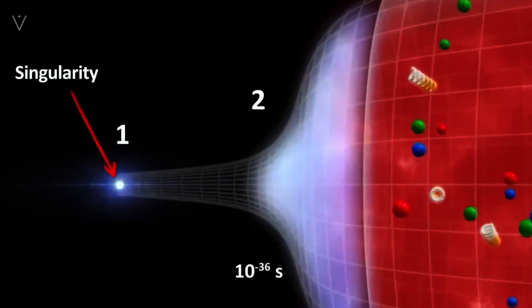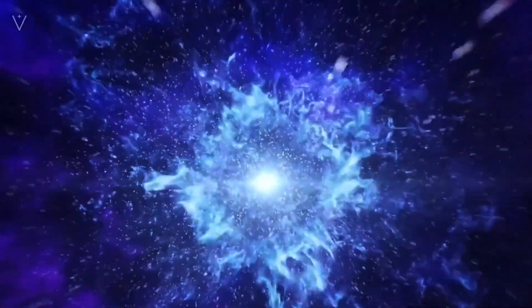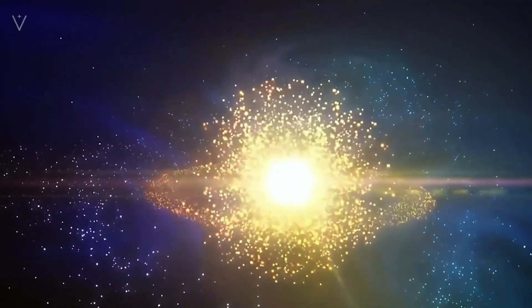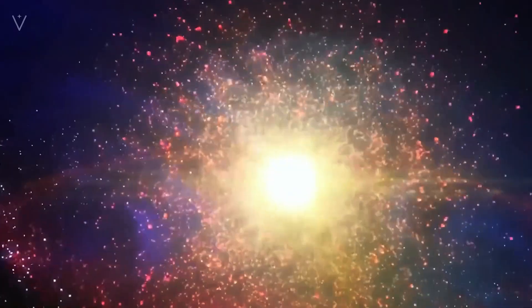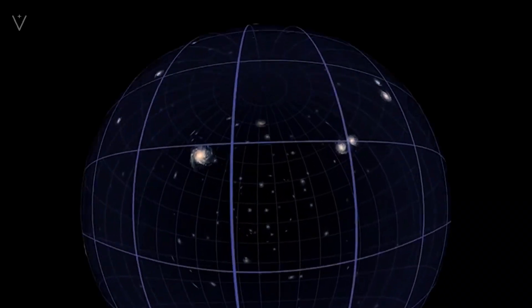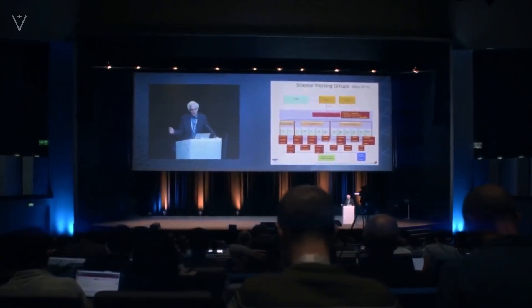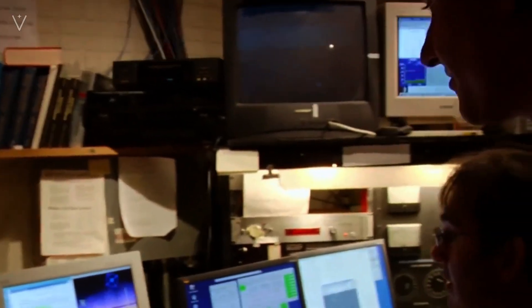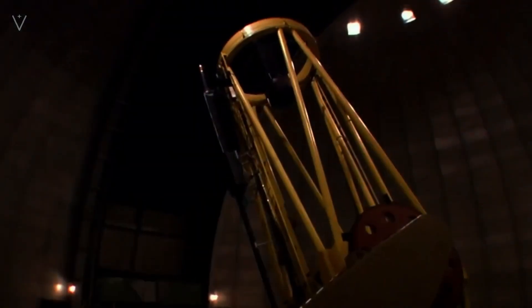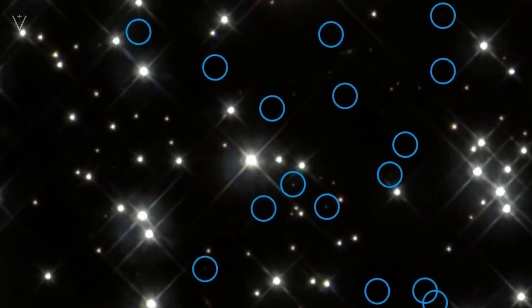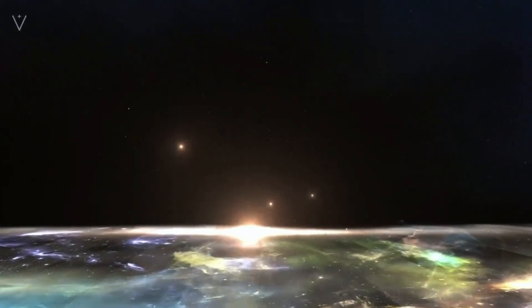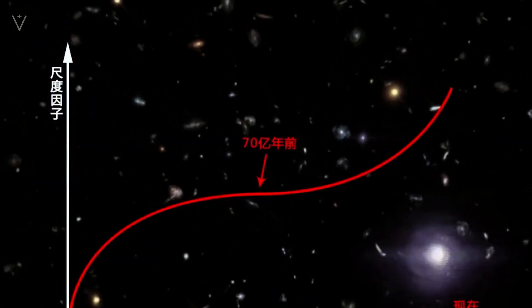Hubble's discovery became the most direct evidence for the theory of cosmic expansion. It is said that Einstein regretted it after learning about it and admitted that the introduction of the cosmological constant was the biggest mistake in his life. Hubble's discovery refreshed human cognition of the universe and established a new concept of the large-scale universe. In order to commemorate Hubble's contribution to modern cosmology, the first optical telescope above the atmosphere was named after him.